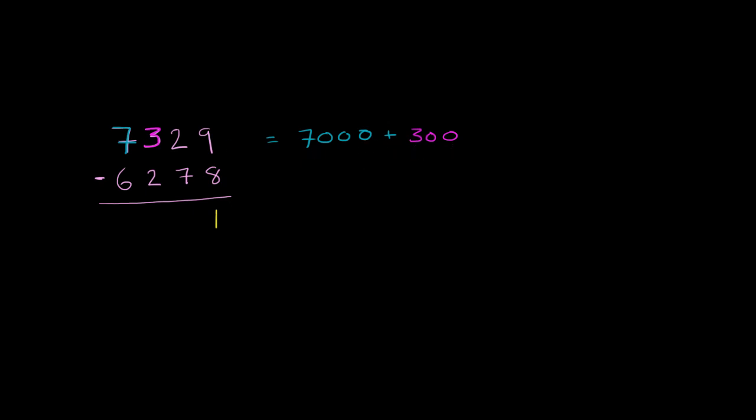The 7 in the thousands place is 7,000. 3 in the hundreds place is 300. The 2 in the tens place, this 2 tens or 20. And then the 9 in the ones place is just going to be 9. So this is another way of representing 7,329.